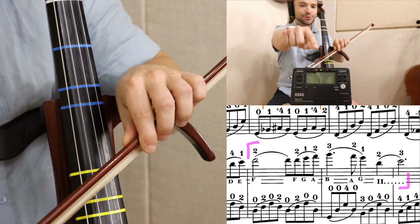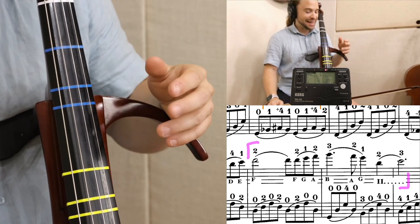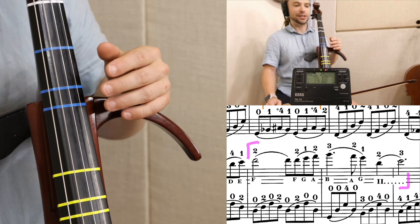So there are two lights on my Korg TM50, TM60 if you have, and I'm going to play this pink passage, this fuchsia-colored passage.